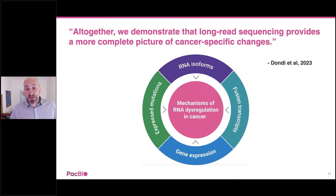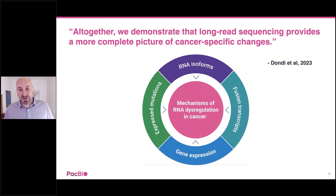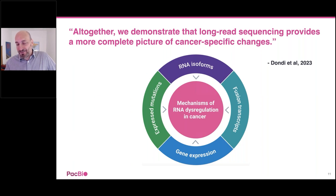We believe, and we're now starting to see the studies coming out, that this is really the way to do RNA sequencing so you don't keep missing important information. In cancer, that is additionally important since there's a lot of information that resides within the transcriptome — isoforms, fusions, expressed mutations, and gene expression — that are interesting to understanding cancer biology. With that, I would like to hand this off to Arthur Dondi, who will present his work on detecting cancer-related RNA dysregulation with long-read sequencing.